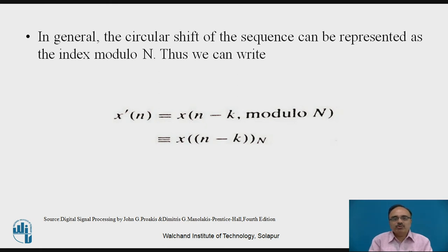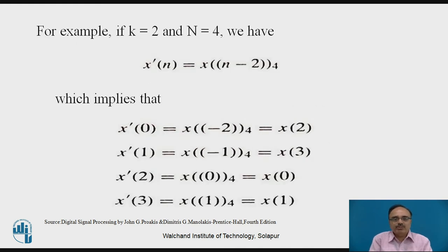In general, the circular shift of a sequence is represented using index modulo N: x((n minus k))_N, where we divide (n minus k) by N and take the remainder. So if N=4 and k=2, the shifted signal x'(n) is x((n minus 2))_4. The values x'(0), x'(1), x'(2), x'(3) correspond to x(2), x(3), x(0), x(1) respectively.